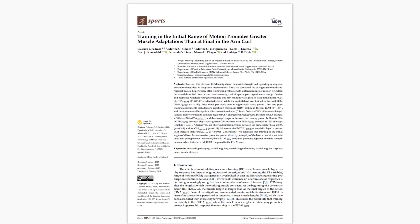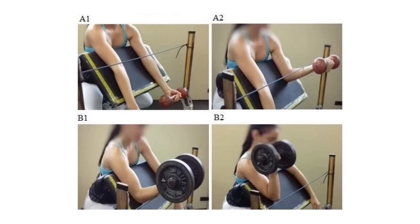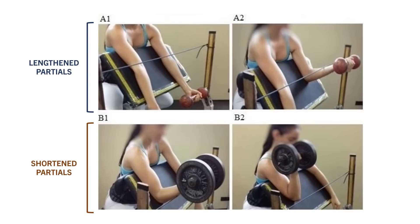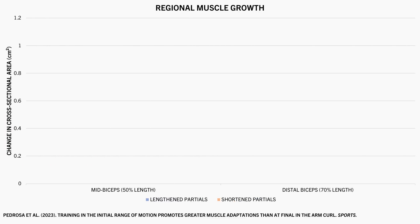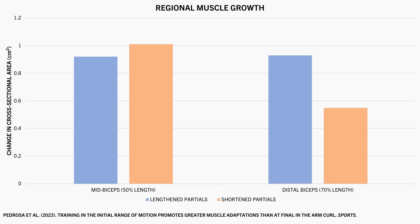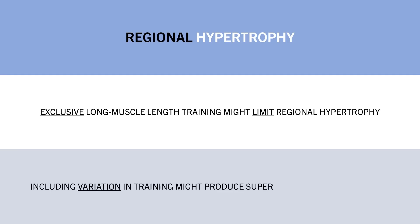For example, this study compared the effects of shortened versus lengthened partials on regional hypertrophy. 19 untrained women performed the same single-arm dumbbell preacher curl protocol for 8 weeks — one arm performed only the lengthened half of the curl, while the other performed only the shortened half. It was found that lengthened partials resulted in superior overall biceps hypertrophy, shown in blue, compared with shortened partials, shown in orange. However, when looking at regional hypertrophy, the middle portion of the biceps at 50% length actually grew slightly more from shortened partials, while the distal biceps at 70% length grew more from the lengthened partials. So if you take long muscle length training to the extreme, you might miss out on some regional hypertrophy benefits, whereas incorporating a variety of exercises and ranges of motion may be more beneficial for complete muscular development across the entire length of the muscle.